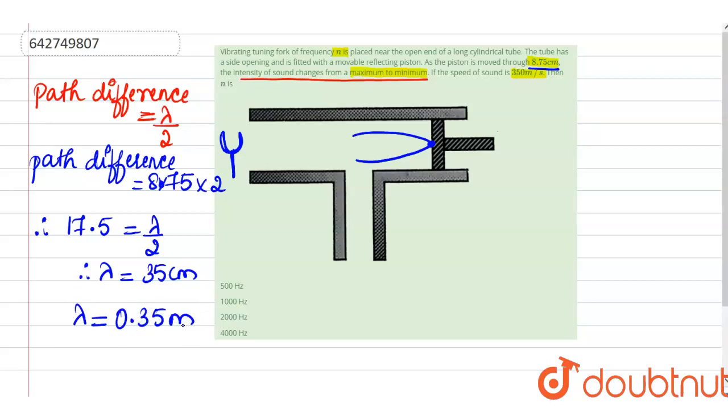Now, what are we supposed to find? We are supposed to find out the frequency of vibrations of this tuning fork which is N. So we know that V is equal to frequency times lambda then, therefore frequency is nothing but V divided by lambda,